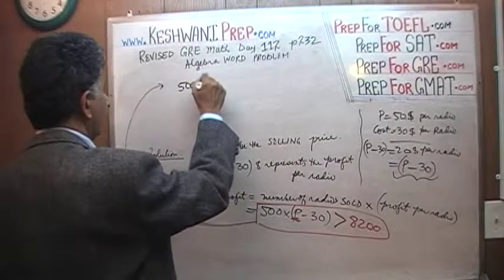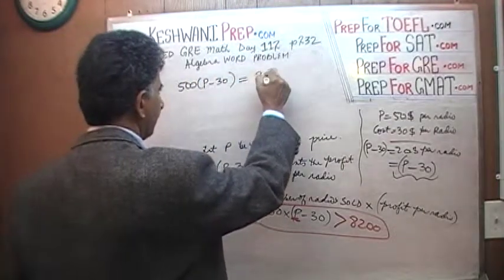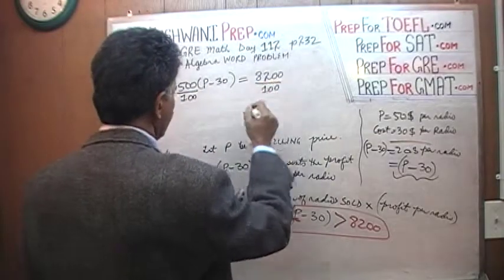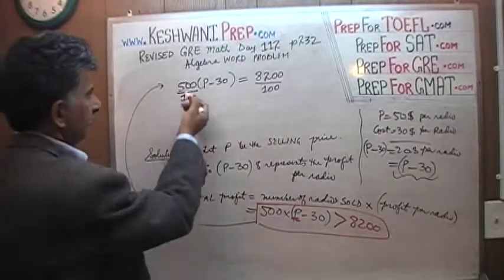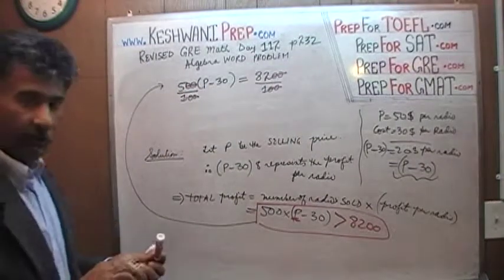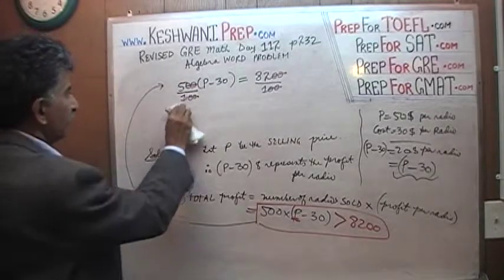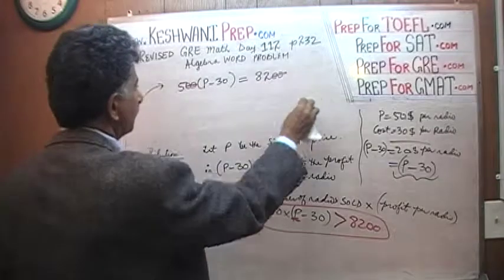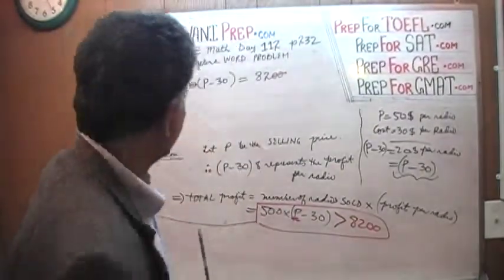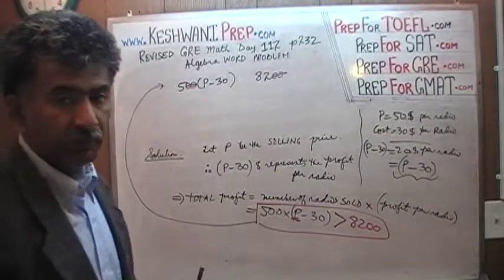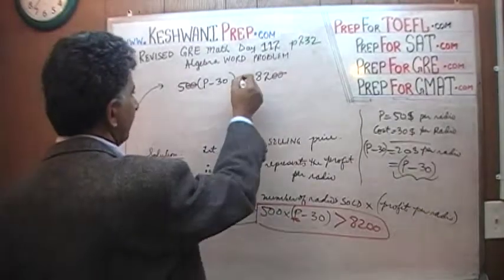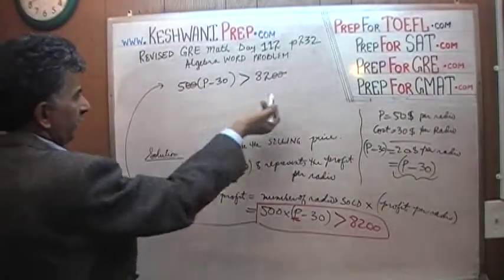500 times (P minus 30) is greater than 8,200. If we divide both sides by 100, the two zeroes cancel out from both sides. This is an inequality, not an equation — but the rules are the same except when multiplying or dividing by a negative number, which we're not doing here. So we divide both sides by 5.